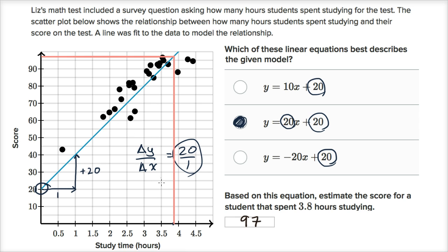But you also have to be careful with these models because it might imply, if you kept going, that if you study for nine hours, you're gonna get a 200 on the exam, even though something like that is impossible.